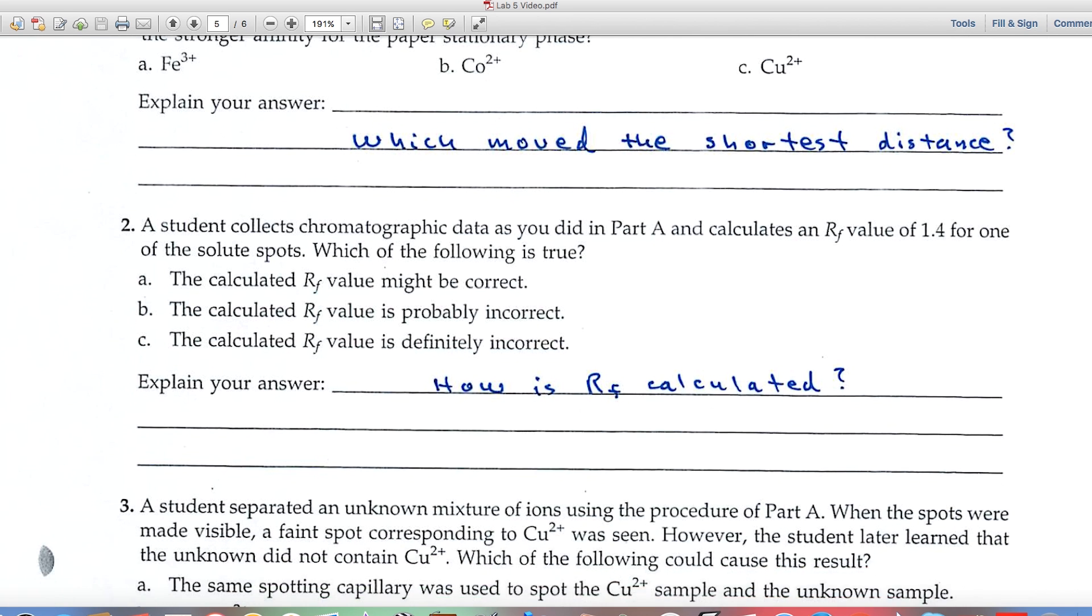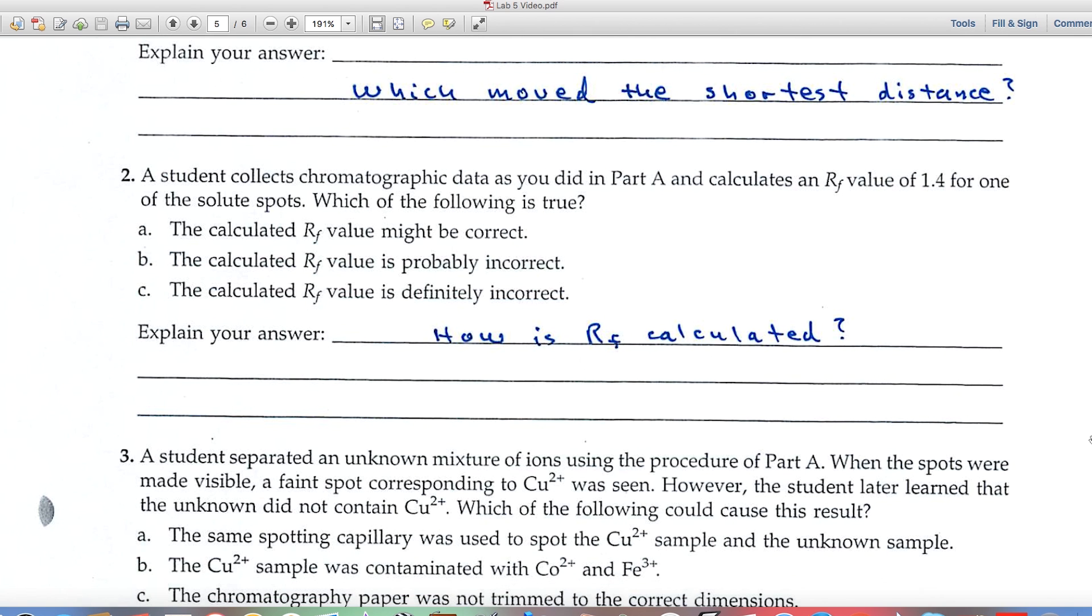Number two, a student collects some chromatographic data, calculates an RF value of 1.4. Which of these, A, B, or C, is most likely correct? Well, keep in mind the formula for RF. How is it calculated? That'll help you answer number two.